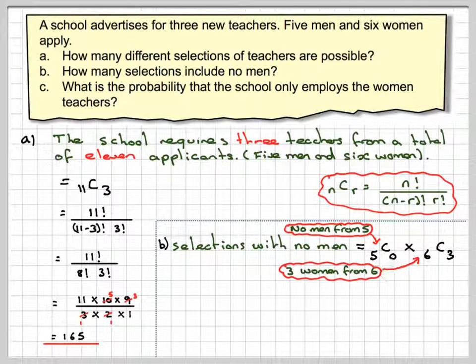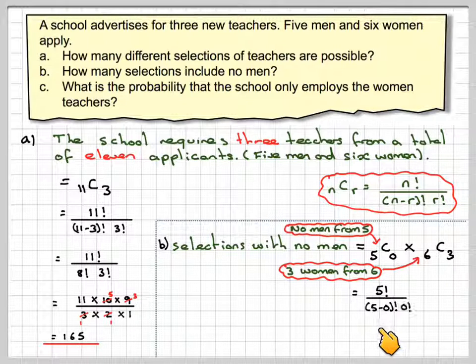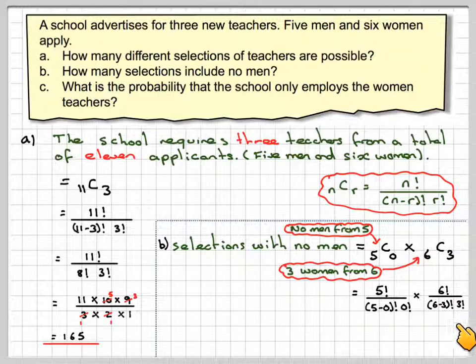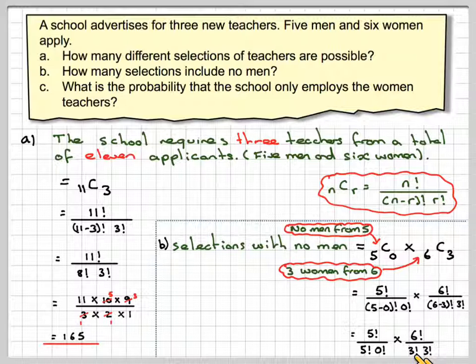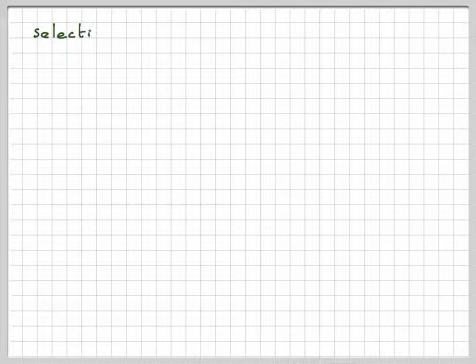We should know that this is equal to 1, but this is 5 factorial over (5 minus 0) factorial times 0 factorial. And this one becomes 6 factorial over (6 minus 3) factorial times 3 factorial. That's 5 factorial over 5 factorial times 0 factorial, times 6 factorial divided by 3 factorial times 3 factorial.